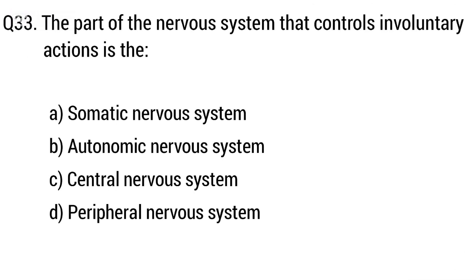Question 33. The part of the nervous system that controls involuntary actions is? The right answer is option B: Autonomic nervous system.